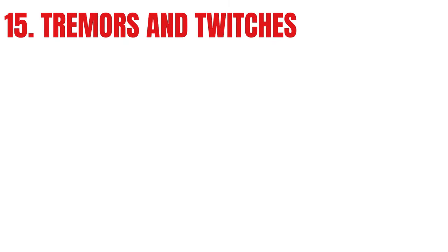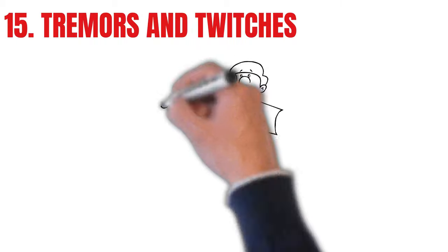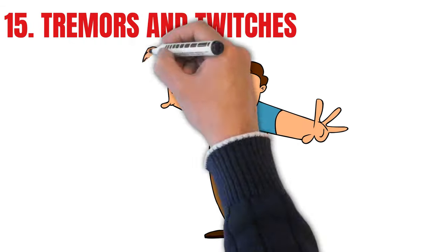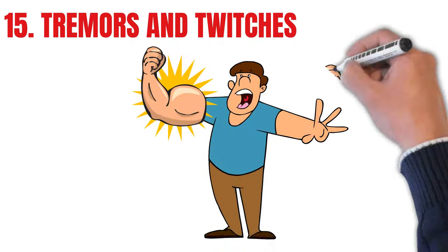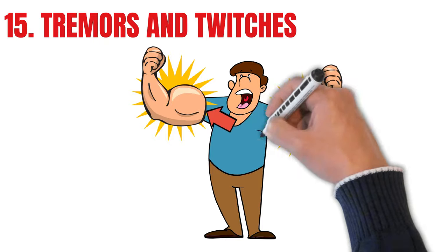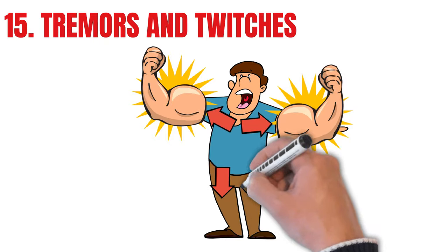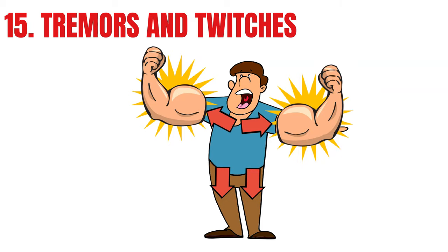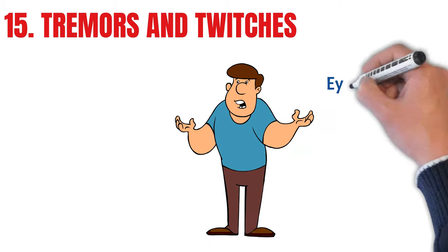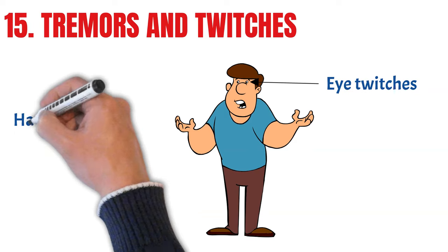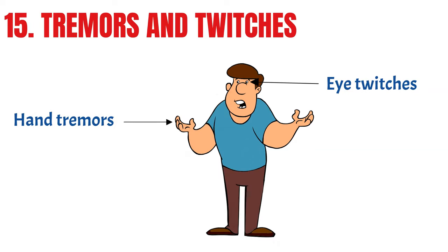Fifteen is tremors and twitches. To deal with danger, the nervous system sends more blood to certain areas, tightens muscles ready for action, increases blood sugar, and primes the whole body ready to fight or run. Any of these can cause twitches or tremors, sometimes even in unusual places like the eye. And hyperventilation can also cause twitching.